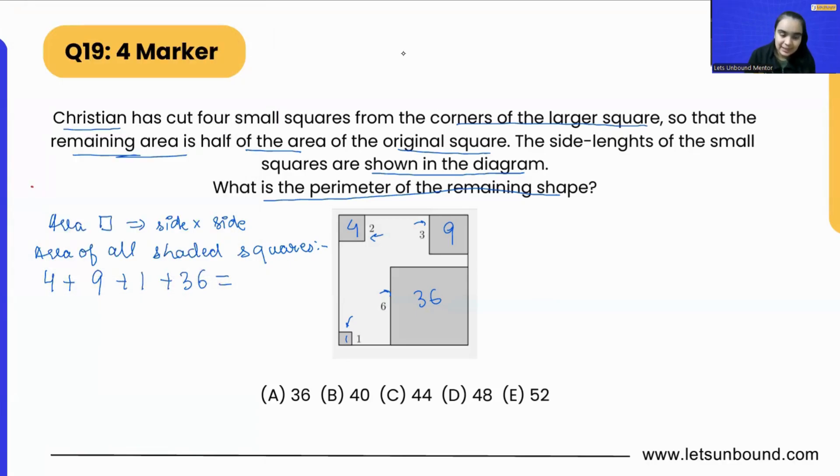So four plus nine plus one plus 36, we are going to get the answer. Let's add one's place and then ten's place. So in one's place we are having nine plus one equals ten, and then six plus four equals ten again. So ten plus ten is twenty, so zero over here and one will carry over under ten's place. Now three plus two is five, so we got the area of these squares as 50.